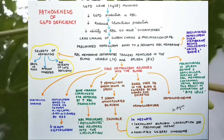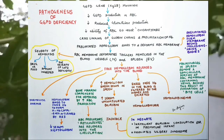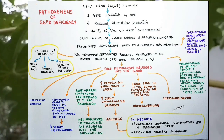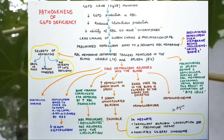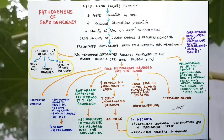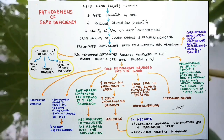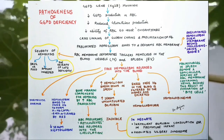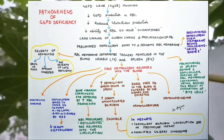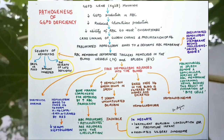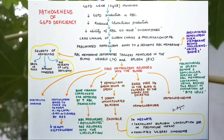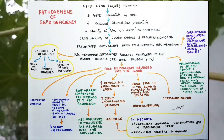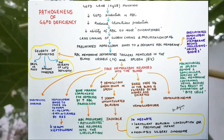RBC membrane deformities trigger hemolysis in the blood vessels as well as the spleen, resulting in both intravascular and extravascular hemolysis. The degree of hemolysis varies with the drug or food, the amount ingested, and the severity of the enzyme deficiency. Hemolysis results in normocytic anemia, and the free hemoglobin binds with haptoglobin; these hemoglobin-haptoglobin complexes are removed by the reticuloendothelial system, resulting in decreased serum haptoglobin levels. Free hemoglobin in the blood is referred to as hemoglobinemia.